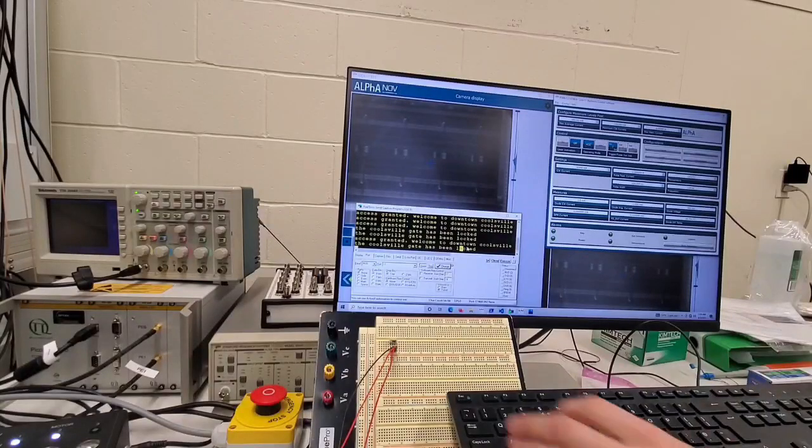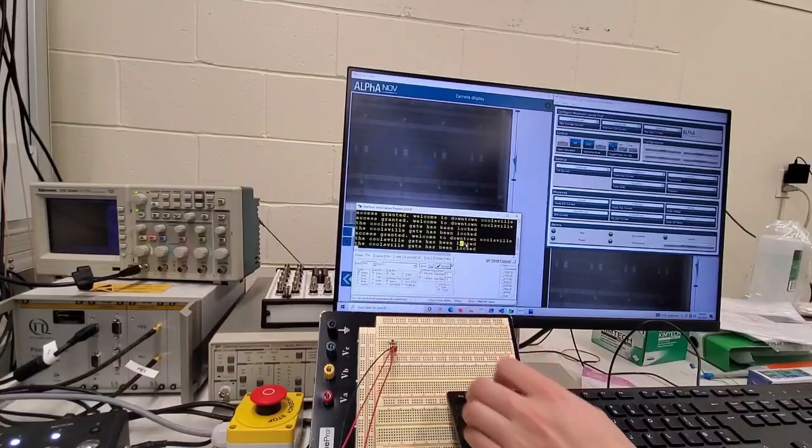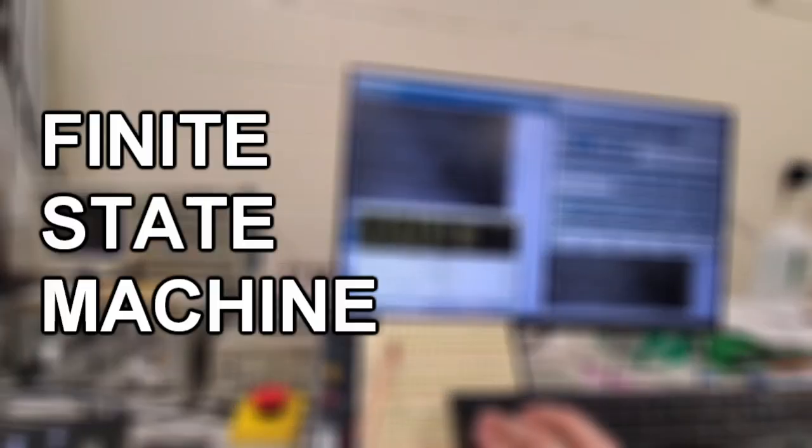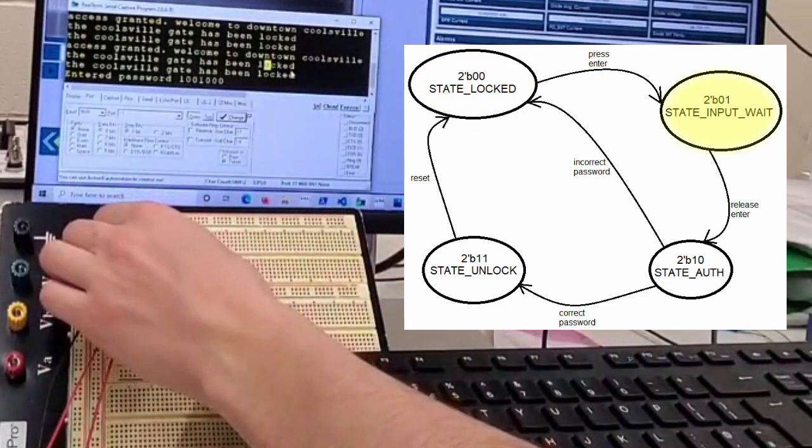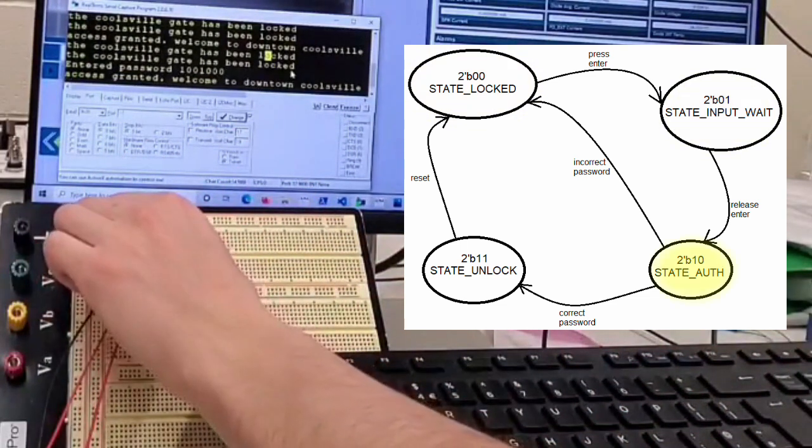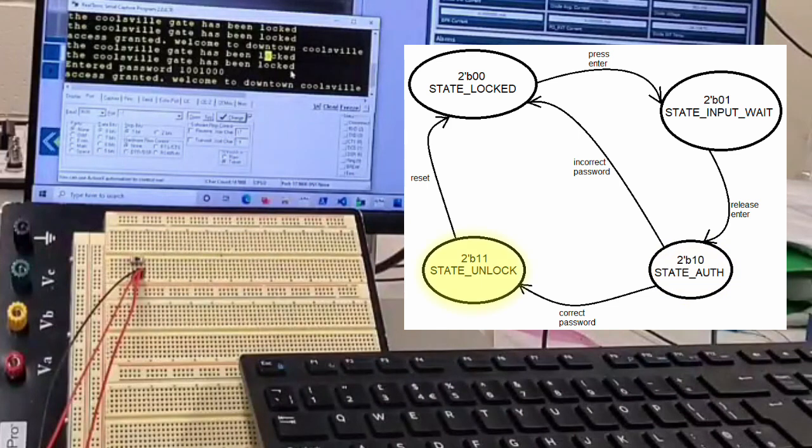This isn't the lock picking lawyer and what I have for you today is a password lock. It is a finite state machine that looks like this. You enter a password and press the button. Upon releasing the button, it checks the password and if it's right, you're in.